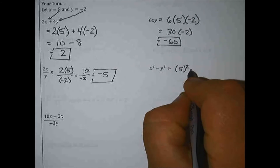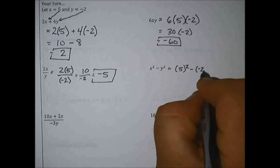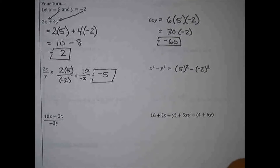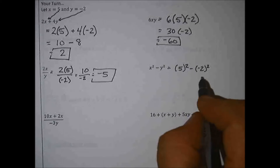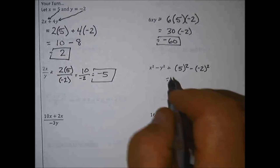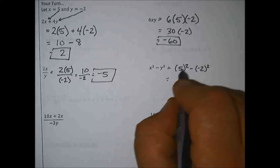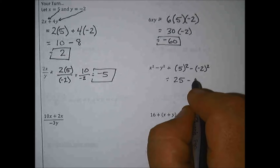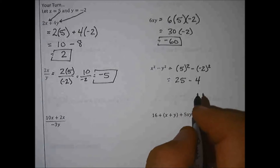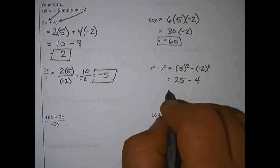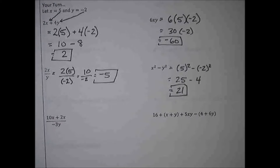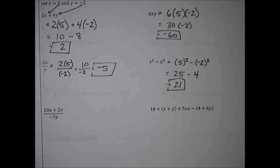Next one: we have x squared minus y squared. That just means 5 squared minus negative 2 squared. If you're going to do this on a calculator and you don't know what negative 2 squared is, make sure you use parentheses around the negative 2, otherwise you'll get the wrong answer. Five times 5 is 25. Negative times negative is positive, so negative 2 squared is 4. Twenty-five minus 4 equals 21.